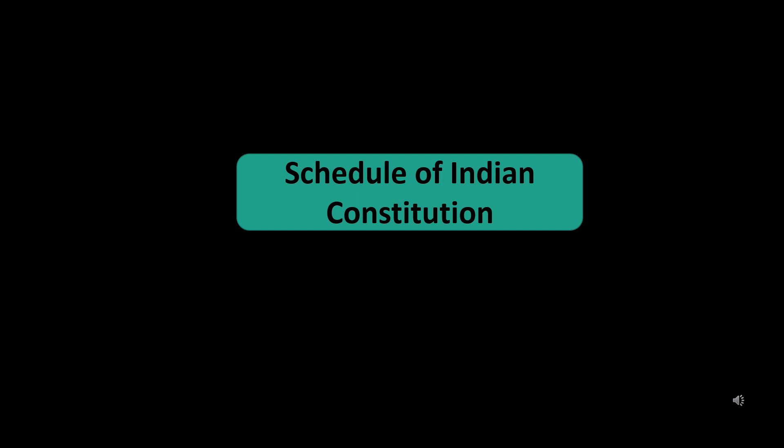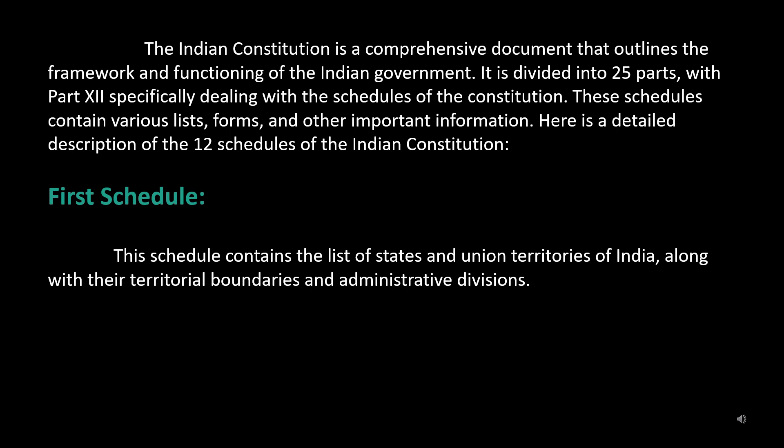Schedule of Indian Constitution. The Indian Constitution is a comprehensive document that outlines the framework and functioning of the Indian government. It is divided into 25 parts, with part 12 specifically dealing with the schedules of the Constitution. These schedules contain various lists, forms, and other important information. Here is a detailed description of the 12 schedules of the Indian Constitution.